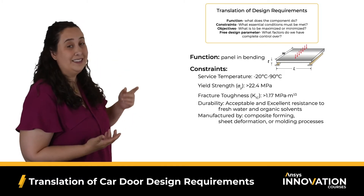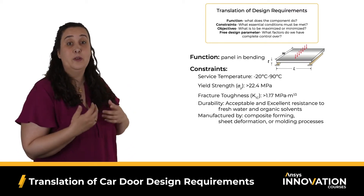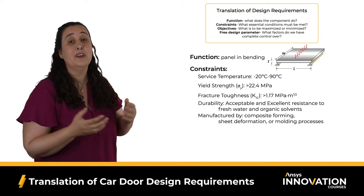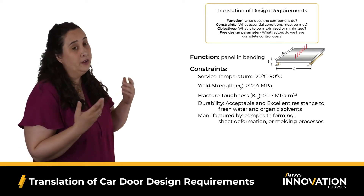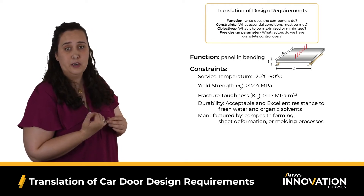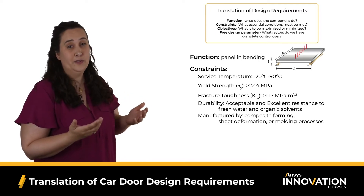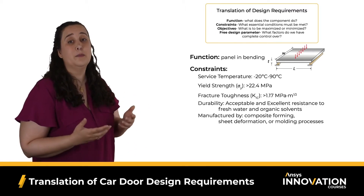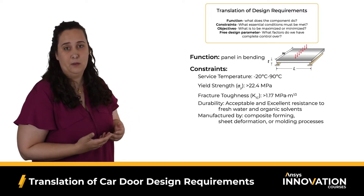Speaking of constraints, we have a pretty extensive list here — but that's good, because that means we are going to be screening out more materials and removing those unsuitable candidates from selection. We have constraints on mechanical properties such as yield strength and fracture toughness, as well as thermal and durability requirements because cars are driven in all kinds of weather. There are even some constraints based on acceptable manufacturing processes for producing this panel.